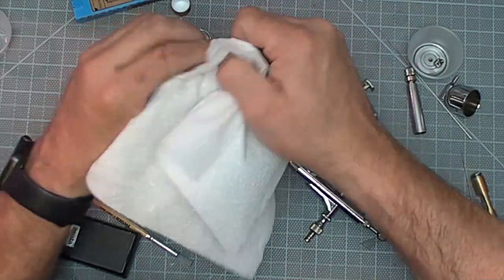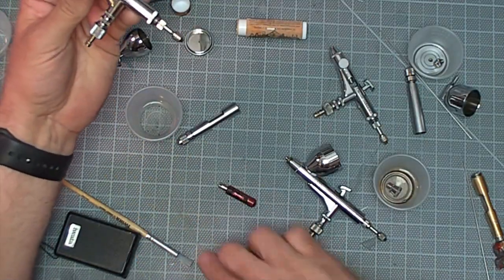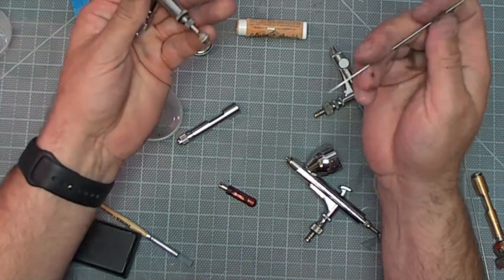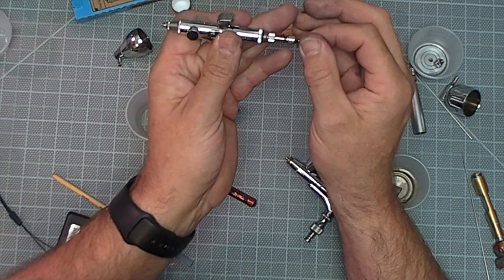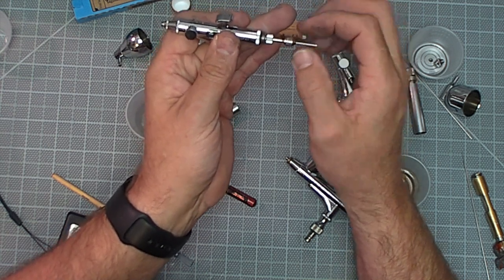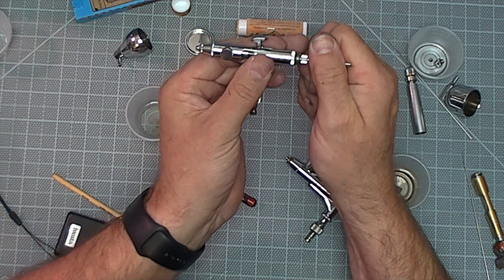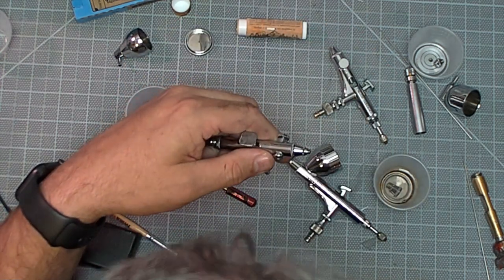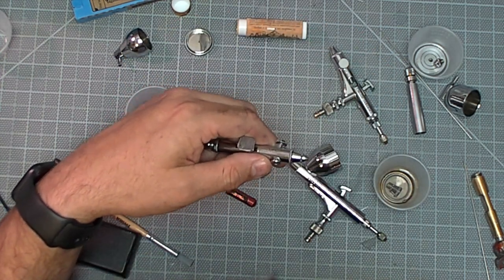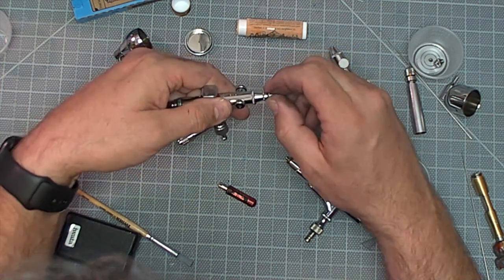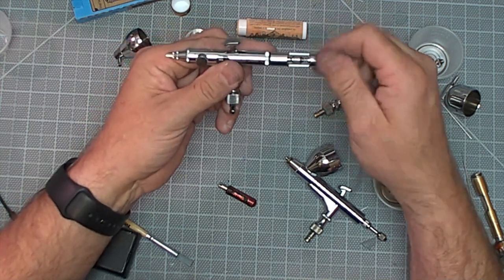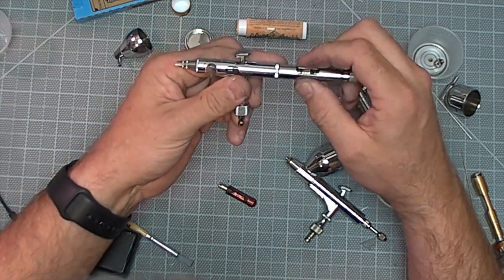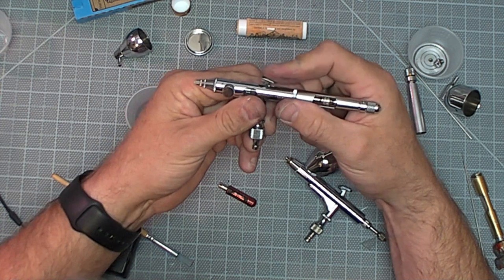Now you have a really nice assembly. I'm gonna throw the needle back in and I just push it up, it seats, give it a little spin. Crown cap back on, rear handle, and this is gonna work as good as the day it came out of the factory.